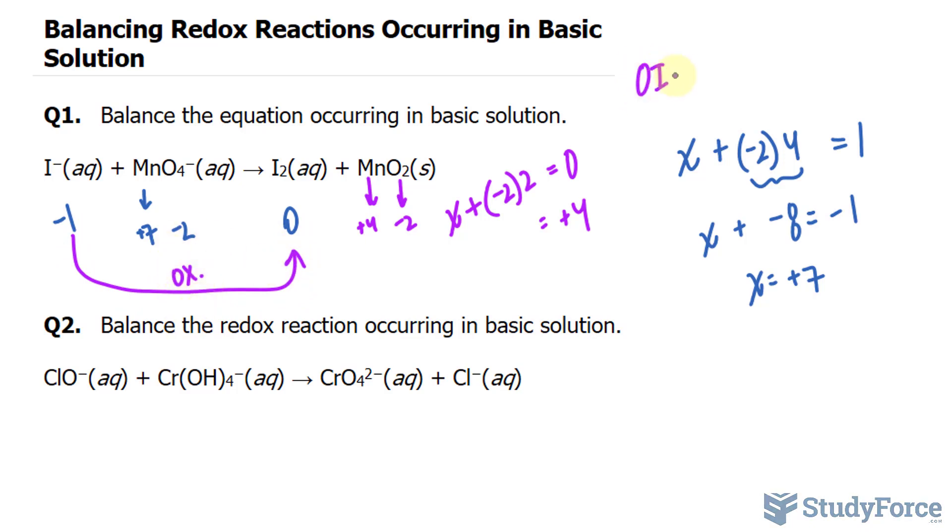Loss of electrons is considered oxidation. Always remember this acronym, OIL RIG, where loss of electrons is oxidation and gain of electrons is reduction.